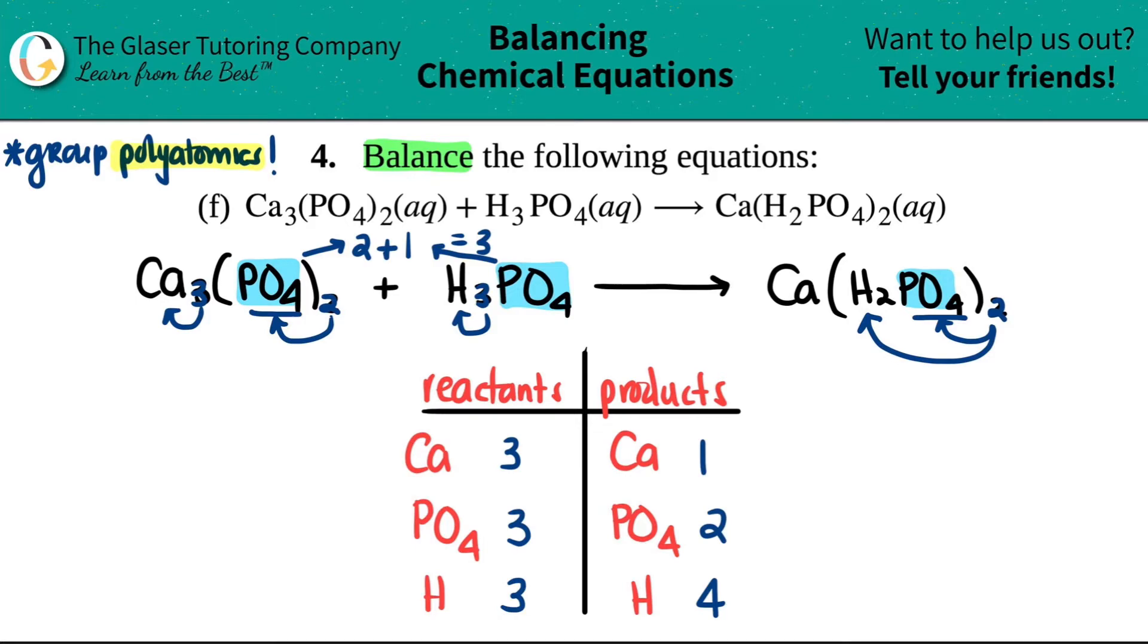I'll try to balance some other things to get it to work. Let's see, maybe I'll start with the calcium. Do I want to start with the calcium? Doesn't really matter. We might have to do some guessing and checking here. Let's start with the calcium. I have one on the product side. One times what will get me three? Oh, one times three.